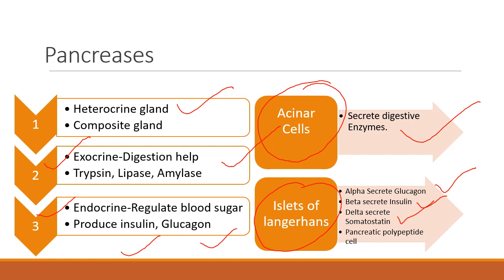The role of glucagon is to break down glycogen to glucose in the liver and increase the blood sugar. Insulin's work is to convert glucose into glycogen and store it in our liver and skeletal muscles, so when we need energy it can be broken down and utilized. Glucagon and insulin work together to maintain blood glucose homeostasis — the level of glucose in our blood.